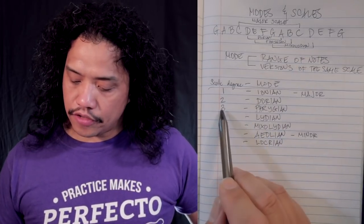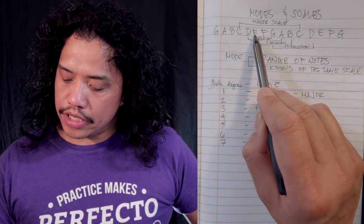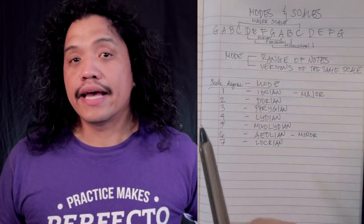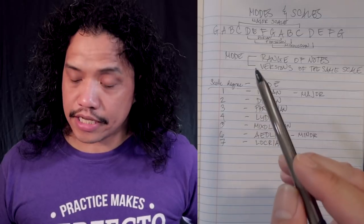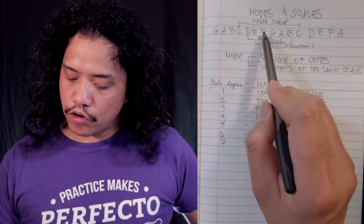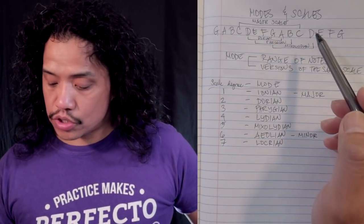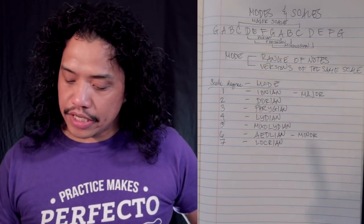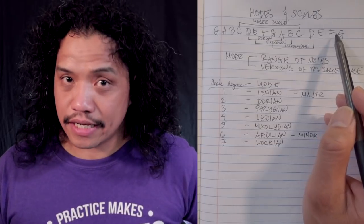Phrygian starts on the third degree, E, going E, F, G, A, B, C, D, E — treating E as your root, that yields the Phrygian sound. For Lydian we start on the fourth degree, F: F, G, A, B, C, D, E, F — those are the notes of your Lydian mode. Mixolydian starts on the fifth degree: start on G, end on G — those are the G Mixolydian notes.